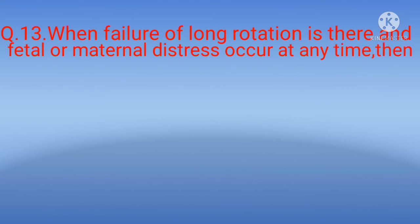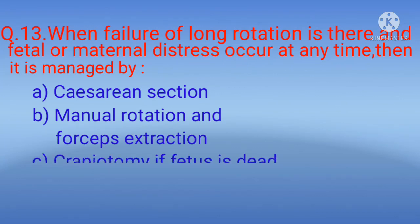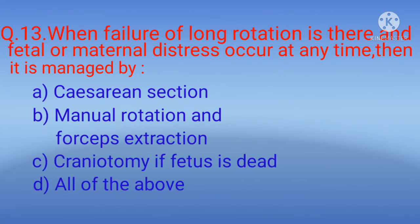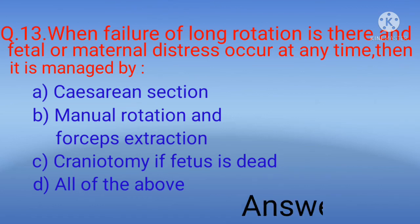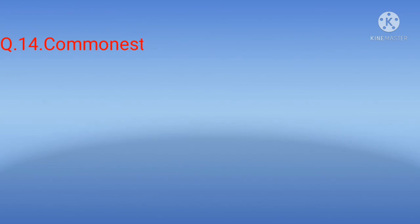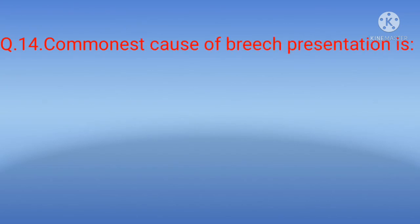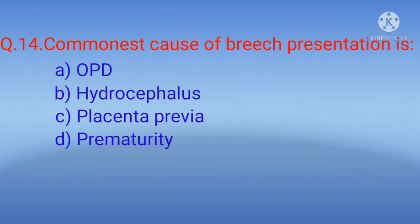Question 13: When failure of long rotation — that is three-eighths of a circle — occurs and fetal or maternal distress occur at any time, it is managed by — options: A) cesarean section, B) manual rotation and forceps extraction, C) craniotomy if fetus is dead, D) all of the above. The correct option is D) all of the above.